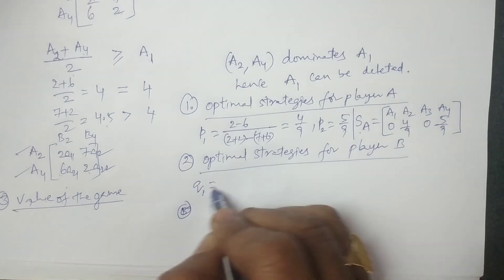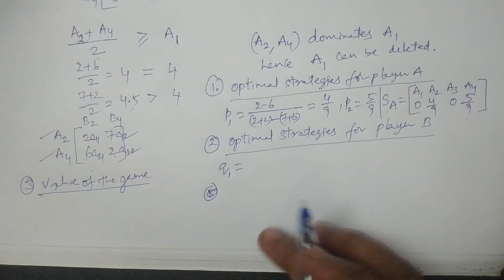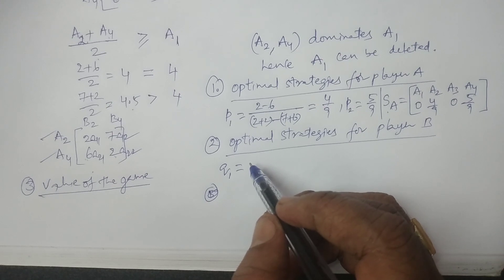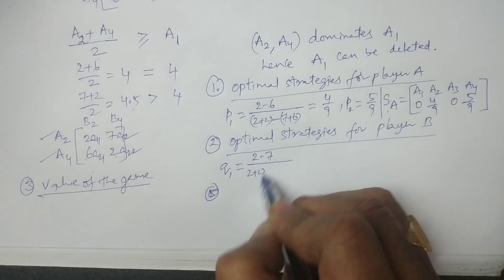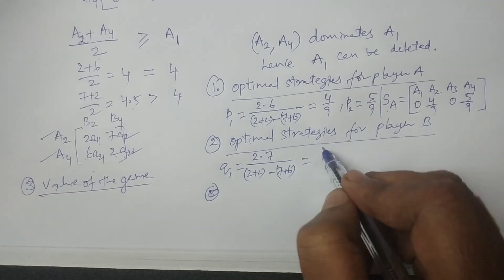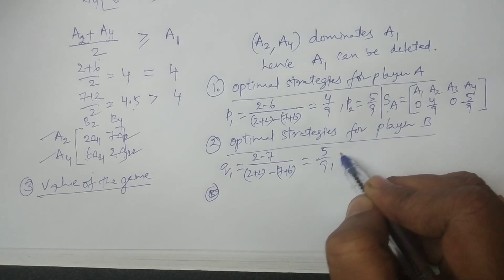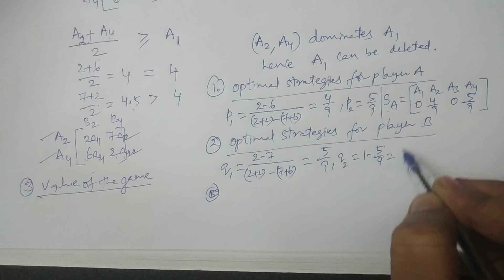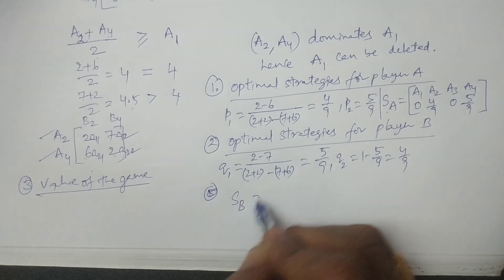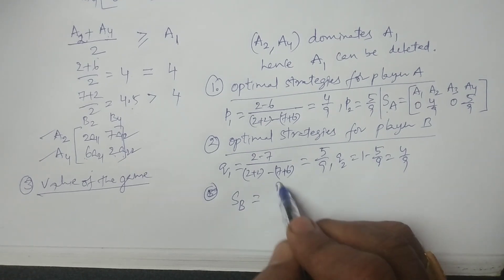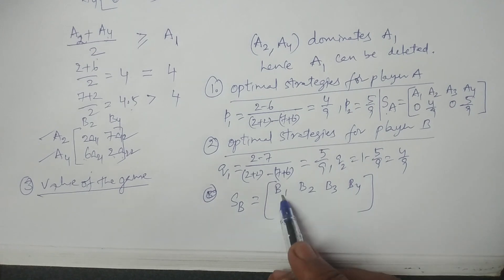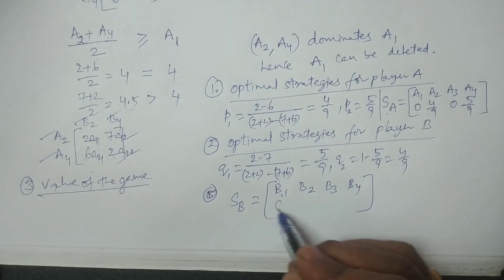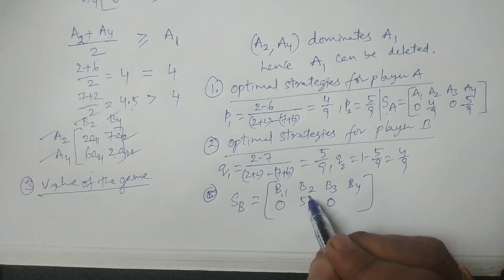For Player B, Q1 is: (A22 − A12) / (A11 + A22 − A12 − A21) = (2 − 7) / (2 + 2 − 7 − 6) = −5 / −9 = 5/9. Therefore Q2 = 1 − 5/9 = 4/9. The optimal strategies for Player B are: B1: 0, B2: 5/9, B3: 0, B4: 4/9.